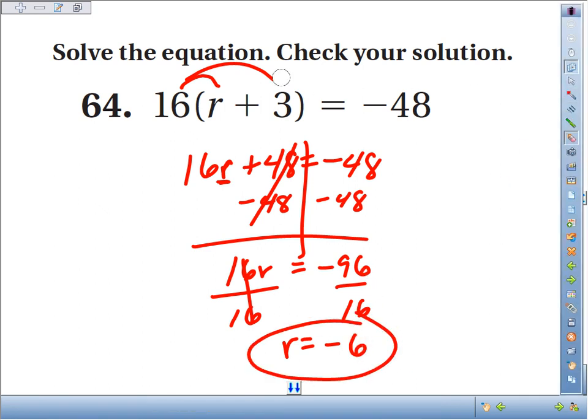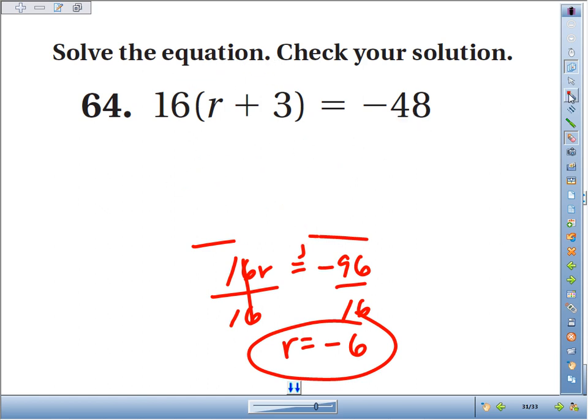Now that's not the only way we could have done that one. You might have recognized that 16 multiplies into 48 right away, so I could have said, I want to get rid of the times 16 first by dividing by 16.